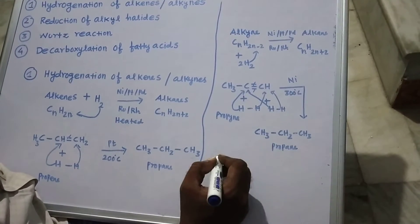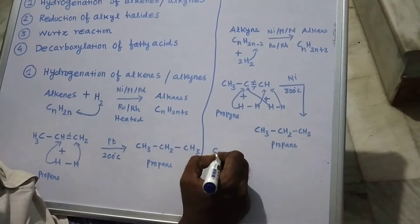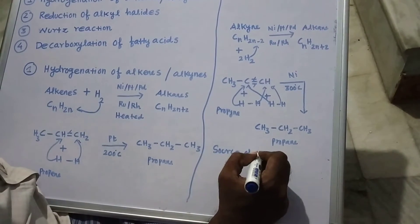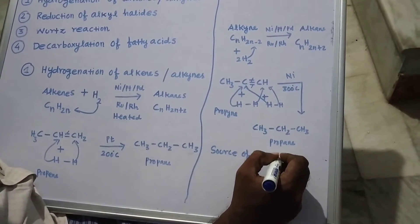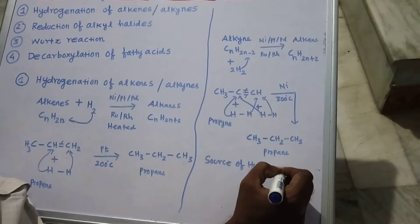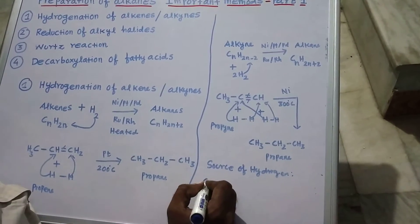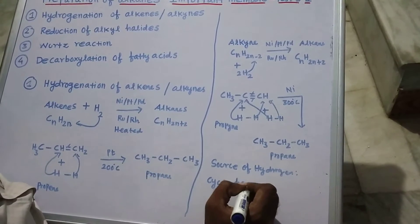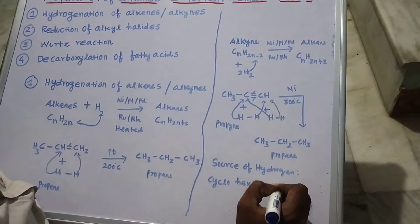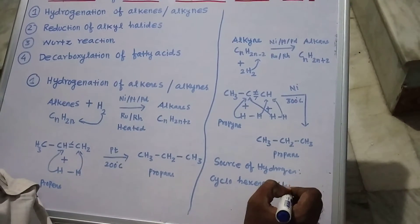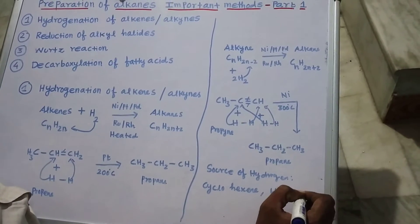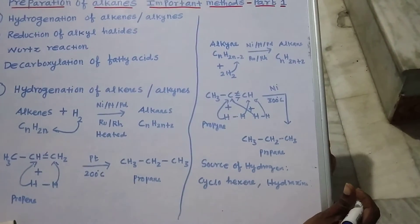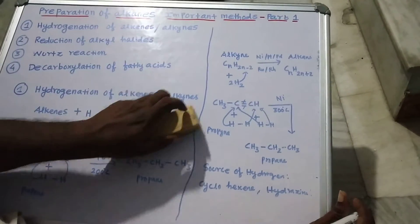We must know the sources of hydrogen in this reaction. In this reaction, the sources of hydrogen are cyclohexene and hydrazine, which act as a source of hydrogen. That completes the first method. Now we move on to the second method.